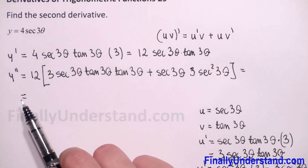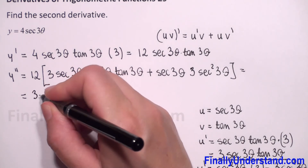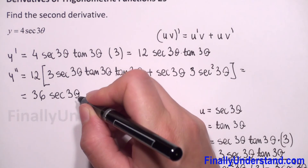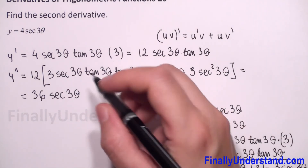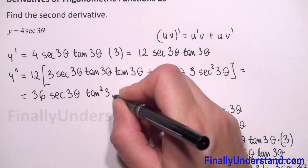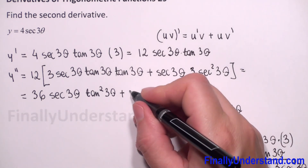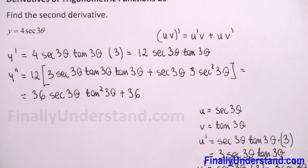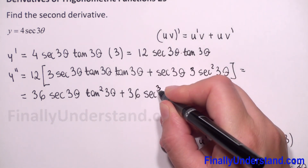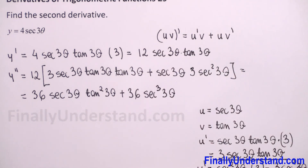We can do the multiplication: 12 times 3 is 36. We have secant(3θ) times tangent times tangent, which is tangent²(3θ). Plus, 12 times 3 is 36, and we have secant to the third power of 3θ. So the final answer is 36·sec(3θ)·tan²(3θ) + 36·sec³(3θ). This is my solution.